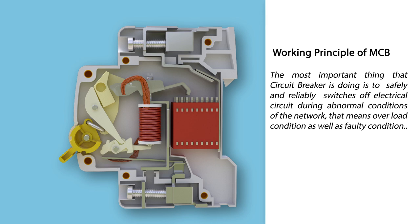Working principle of circuit breaker: the most important thing that a circuit breaker does is to safely and reliably switch off an electrical circuit during abnormal conditions of the network — that means overload conditions as well as faulty conditions.